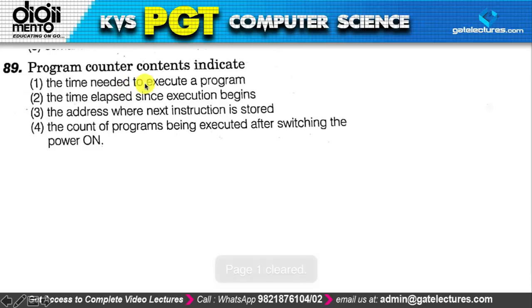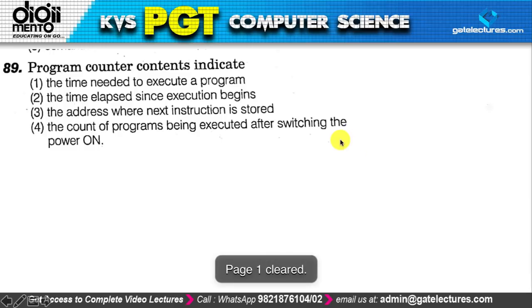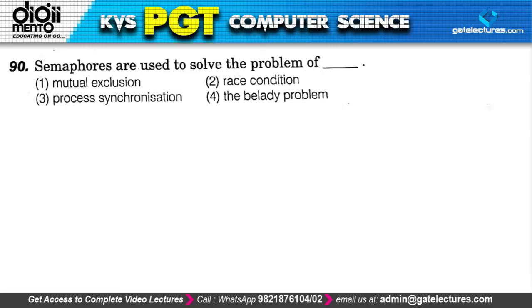Next: what do the contents of the program counter indicate? Generally, the program counter's content indicates the address of the next instruction to be executed. Option 1 (time to execute a program) is wrong; option 2 (time elapsed) is wrong; option 4 (count of programs being executed) is also wrong. The correct answer is option C — the address where the next instruction is stored.